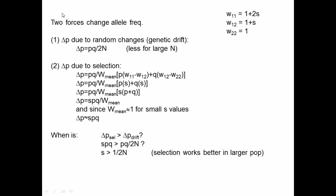What we'll think about now is the balance between these forces — in particular, under what conditions is selection going to be more powerful than drift when thinking about a population. The change in allele frequency due to random changes, or genetic drift, is pq over 2N, and that change in frequency per generation is less for larger populations because that would have a larger denominator.